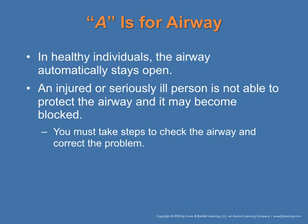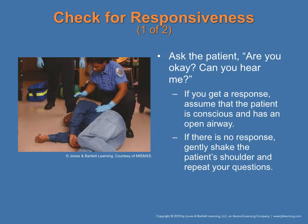A is for airway. In healthy individuals, the airway stays open. In an injured or seriously ill person, there's potential the airway will be blocked because the tongue gets in the way — it's a muscle that just flaps. You must understand when the airway is an issue and know how to correct it. First, pat the person and ask: 'Are you okay? Can you hear me?' If you get a response — even saying their name — the airway is intact.